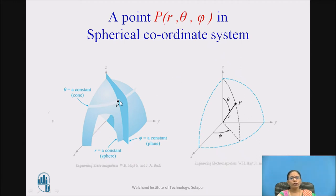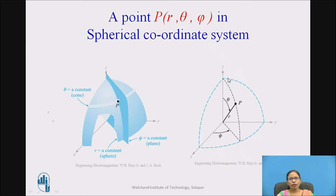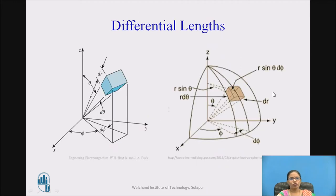Point B is the intersection of all three coordinates: the r-constant circle, the theta-constant cone, and the phi-constant plane. The intersection of these three gives me the point B which is (r, theta, phi). If I want to draw it simply, I can draw a small section of a sphere and take angle phi with respect to the x-axis, and angle theta with respect to the z-axis. This is the point B, and r is the radius.